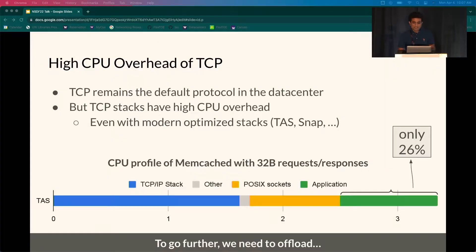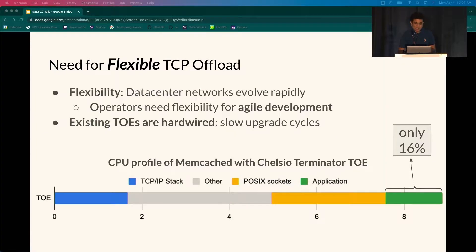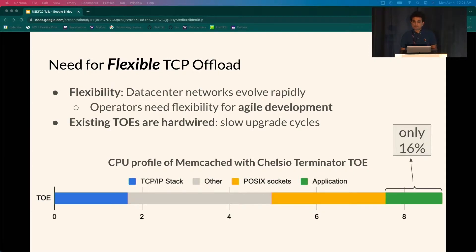To improve further, we need to offload the TCP stack processing. However, the offload needs to remain flexible. Data center networks evolve quickly and have diverse requirements. To satisfy them, operators require flexibility to debug, trace, manage, and adapt the network stack with high velocity. While existing TCP offload engines improve performance, they hardwire the transport logic, leading to slow upgrade paths and operational issues at scale.